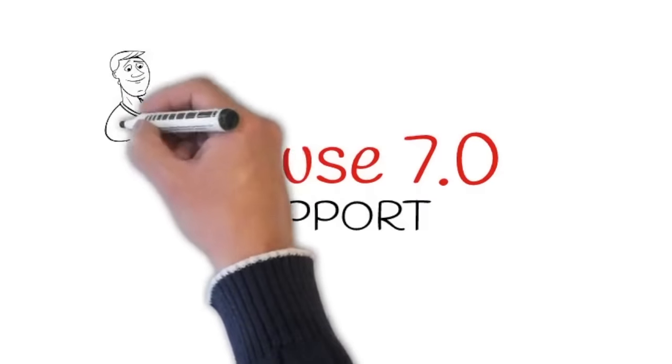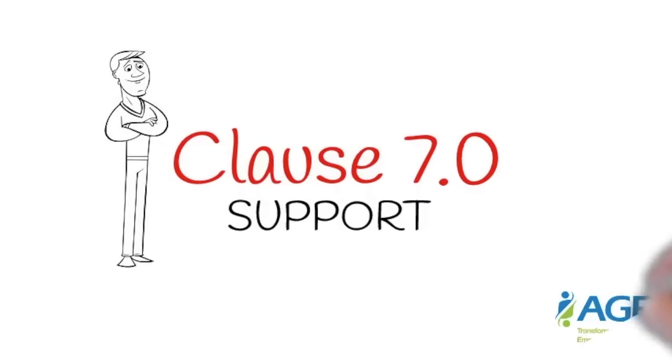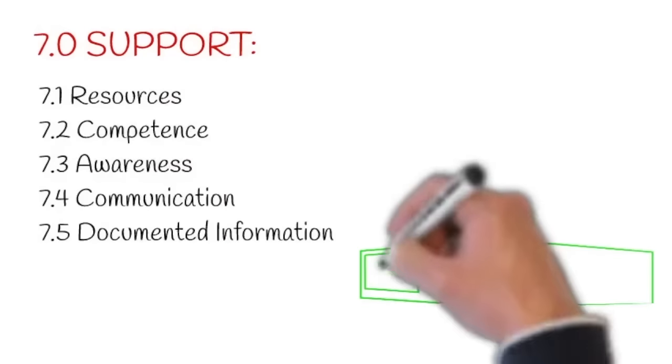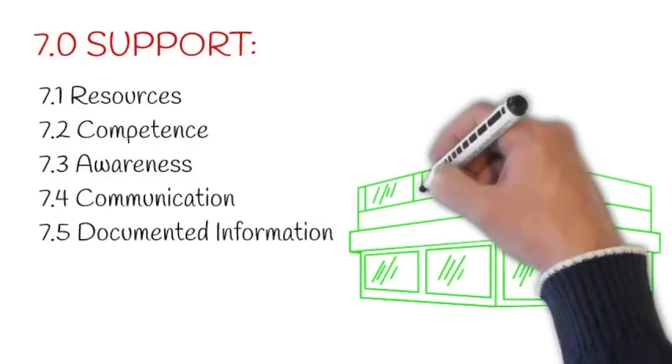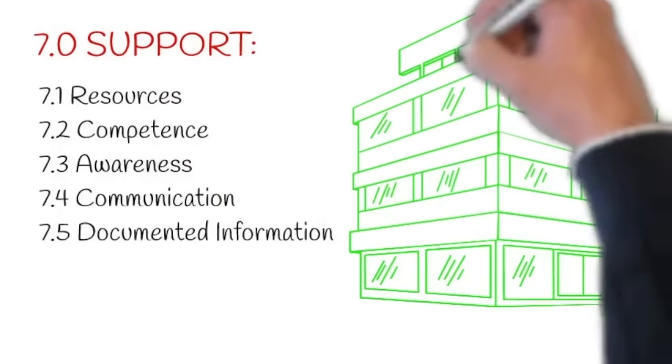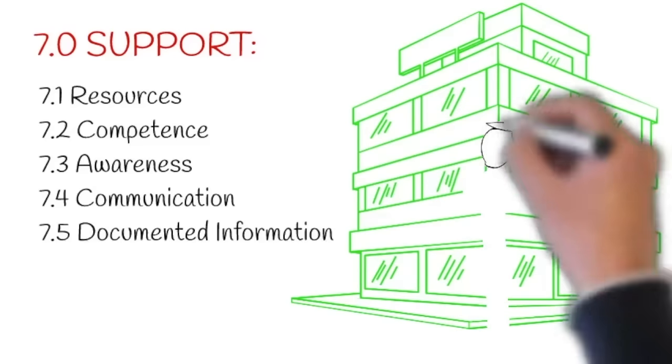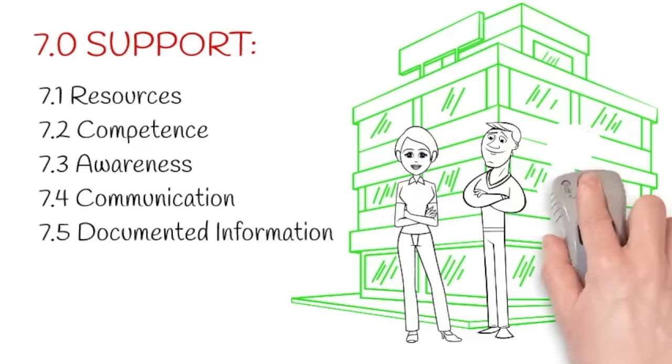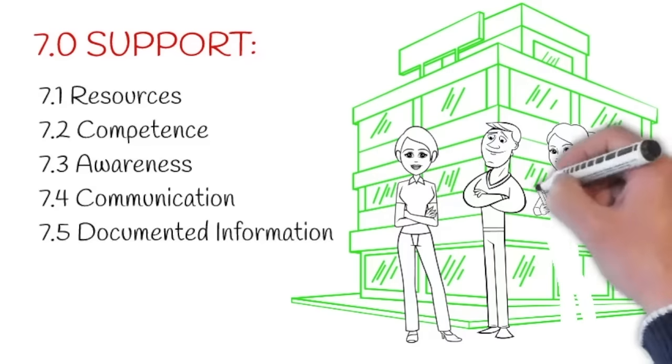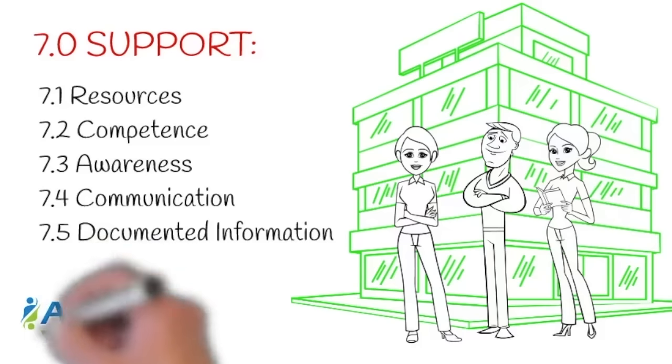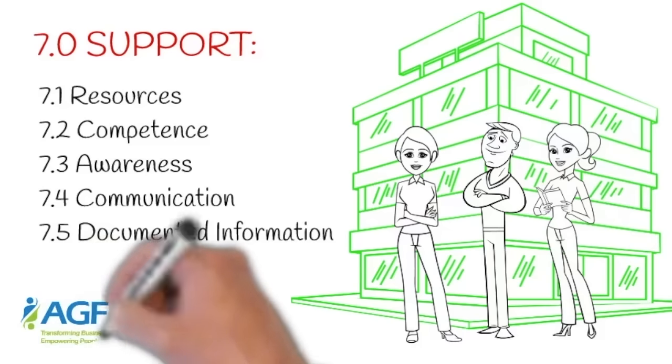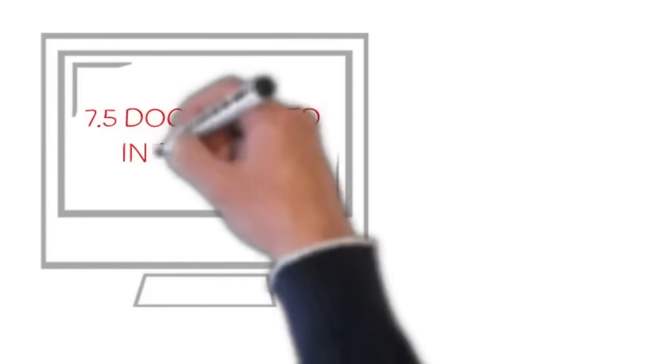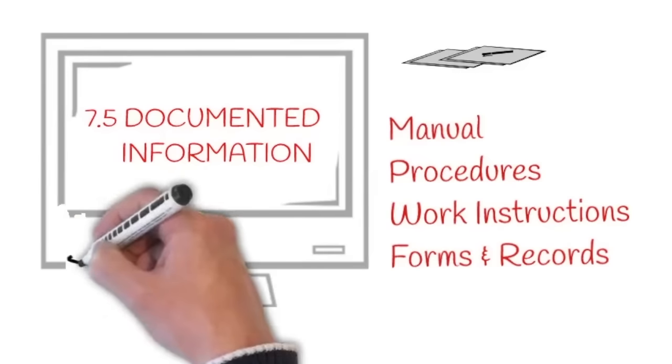Regardless of business size, without adequate support the business will fail. ISO 9001 defines the following as critical support: resources, competence, awareness, communication, and documented information. Resources include competent and motivated people, adequate infrastructure, and work environment for the efficient operation of the processes. The use of resources should also be monitored and measured. Part of support is documented information, which is composed of quality manual, procedures, work instructions, and records.